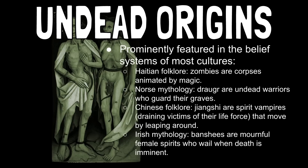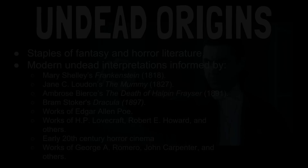Just some examples — this is merely a handful. In Haitian folklore, you have zombies that are corpses animated by magic, the voodoo idea that zombies are created through magic. In Norse mythology, there are things called draugr, who are undead warriors who guard their graves — if you break into a tomb, the warriors rise to protect their resting places. In Chinese folklore, there's something called a jiangshi, which are spirit vampires that instead of draining blood, drain their victim's spirit, soul, and life force. Most terrifyingly, they don't fly like a typical vampire — they leap around, which is almost a little creepier. And in Irish mythology, the banshee — mournful female spirits who you can hear wailing on the wind when death is on the horizon — is a superstition of an undead creature.